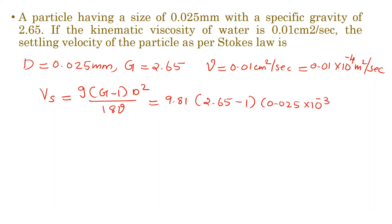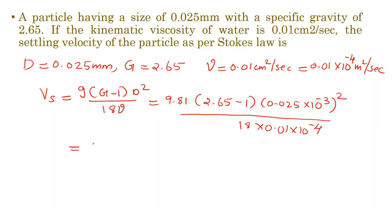Substituting: D is 10⁻³ m squared, divided by 18 into 0.01 into 10⁻⁴. Solving, the settling velocity is 5.62 × 10⁻⁴ meters per second.